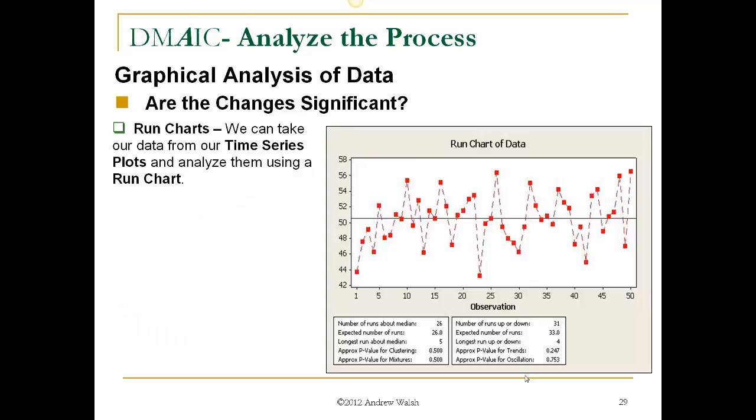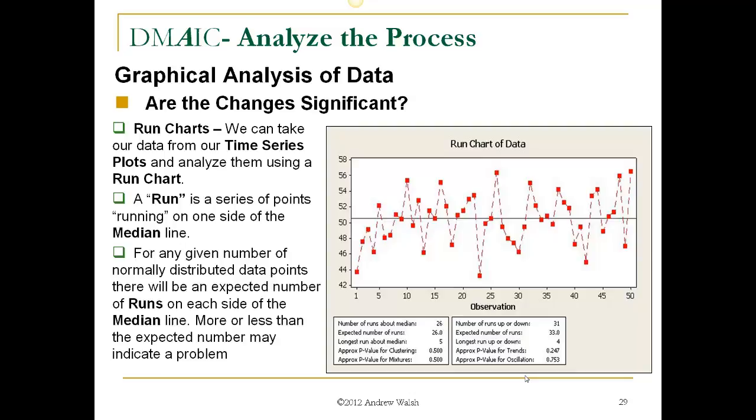So how do we know whether they're significant? Well, we can use run charts. We can take our data from our time series plots and analyze them using a run chart. A run in a run chart is a series of points running on one side of the median line. For any given number of normally distributed data points, there will be an expected number of runs on each side of the median line. More or less than the expected number may indicate a problem. And here in the boxes below, you see that it says number of runs about median, 26. The expected number of runs, 26.0. So this data looks like it's behaving the way it would be expected to behave. And the number of runs up or down in the next box, 31. The expected number of runs, 33. So that's pretty close.